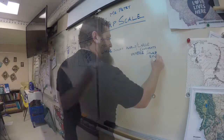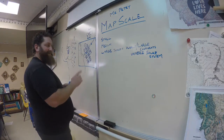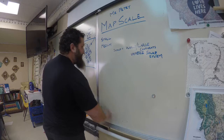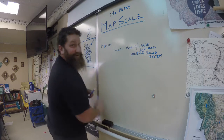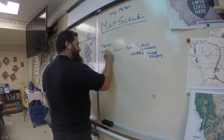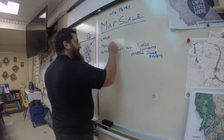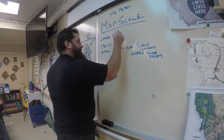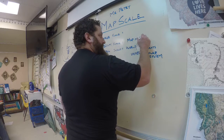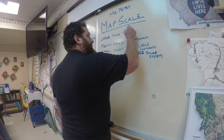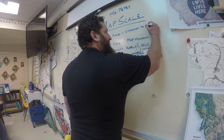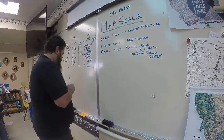I totally had it wrong — let me correct this. Small scale covers large areas like the world, a planet, your oceans. Medium scale would be states or small countries. Large scale would be anything from a city down to a residential home or piece of property.